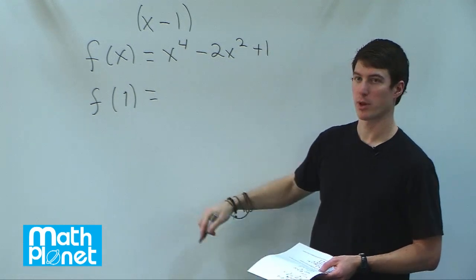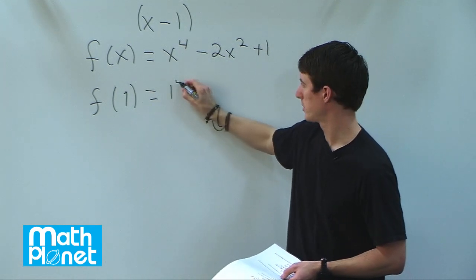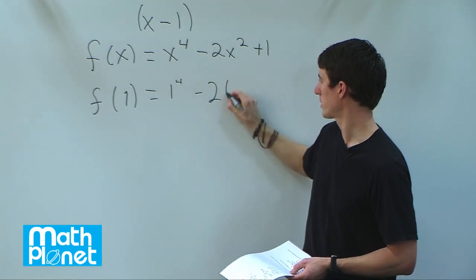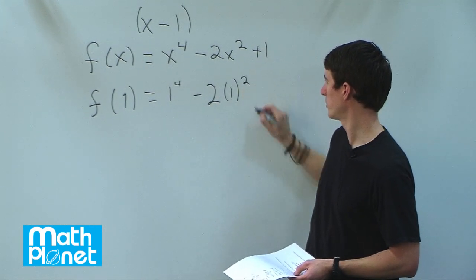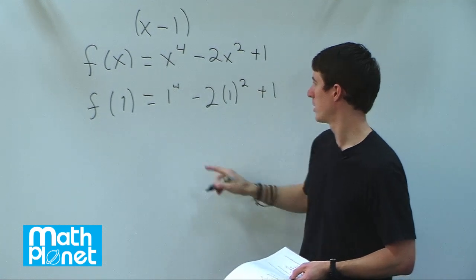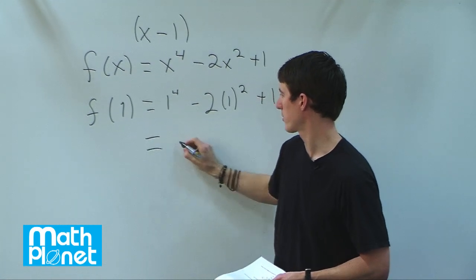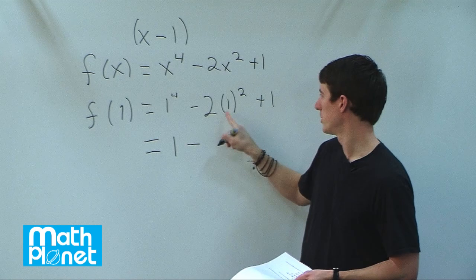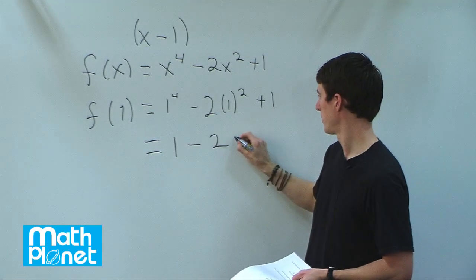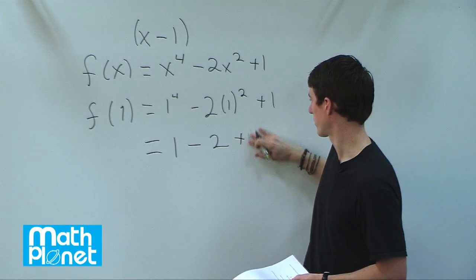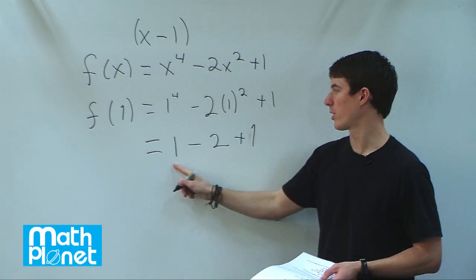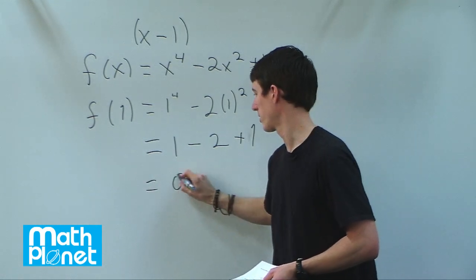We just plug in 1 at each point. So 1 to the power of 4 minus 2 times 1 to the power of 2 plus 1. What does that give us? That's 1 minus 2 times 1 plus 1, which equals 1 minus 2 plus 1, which is 0.